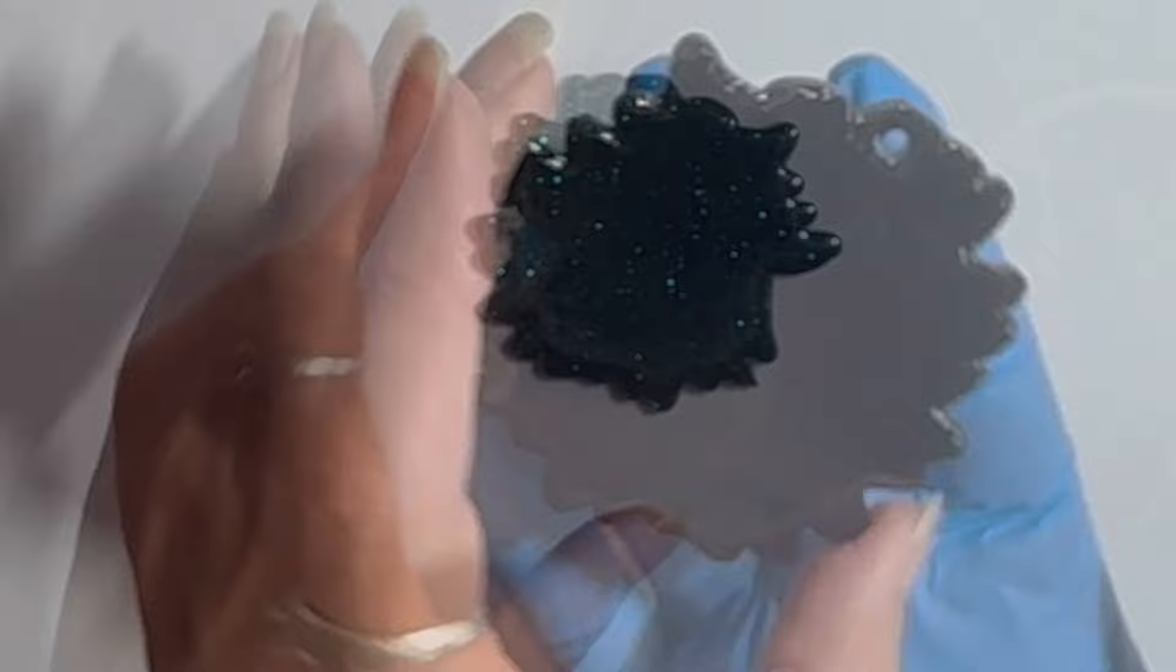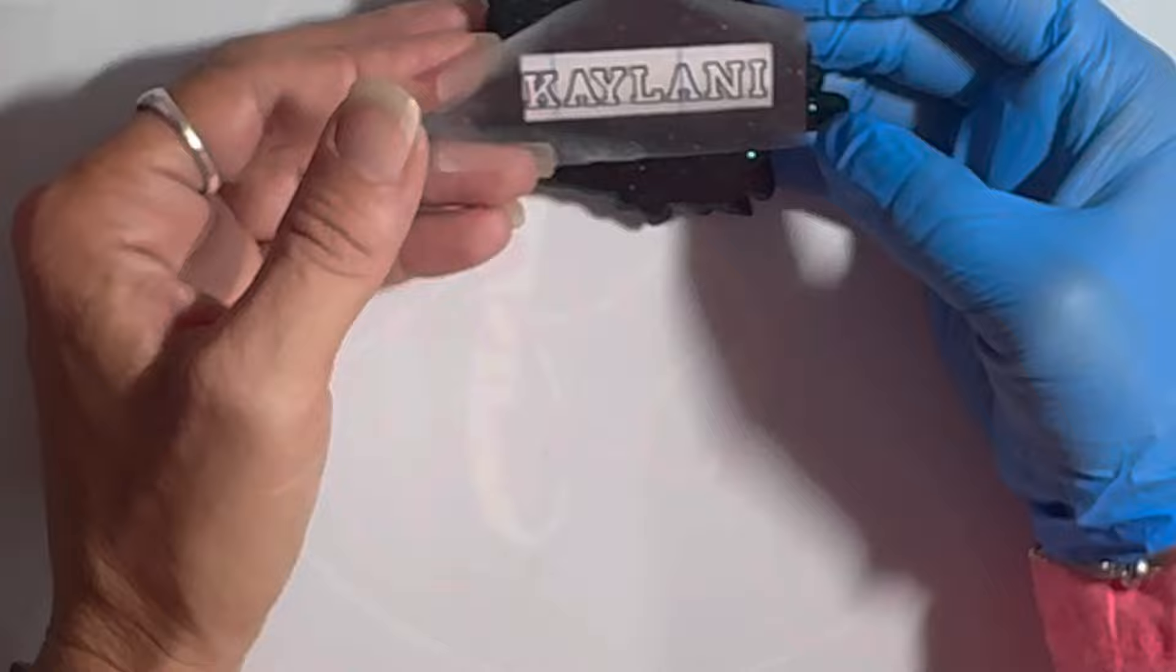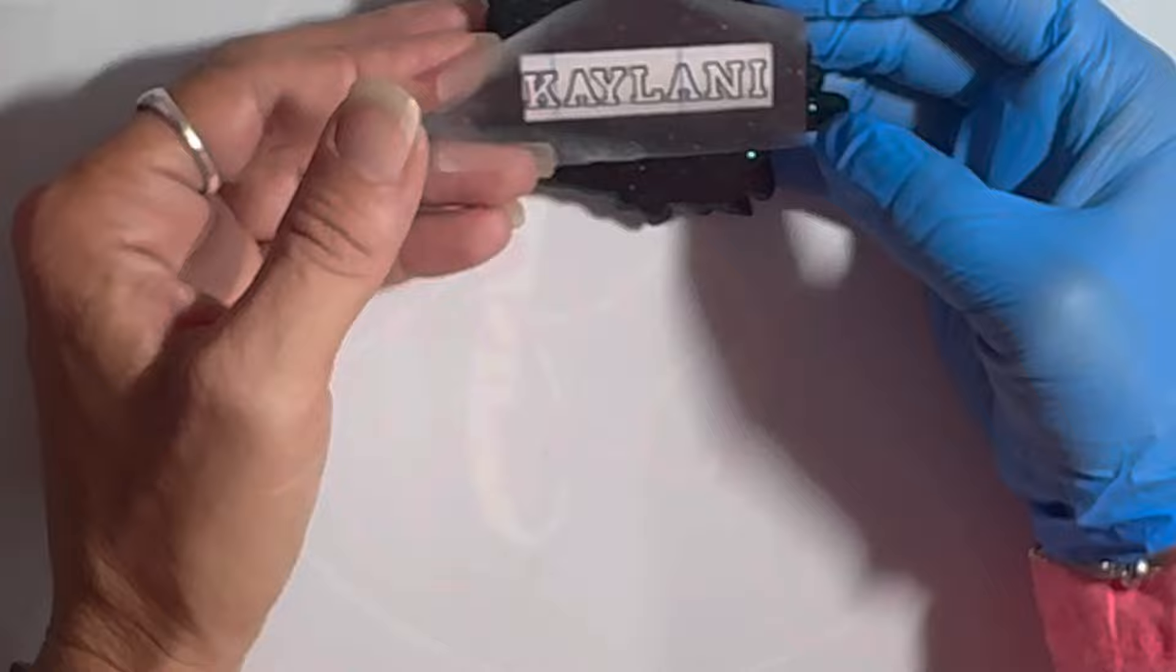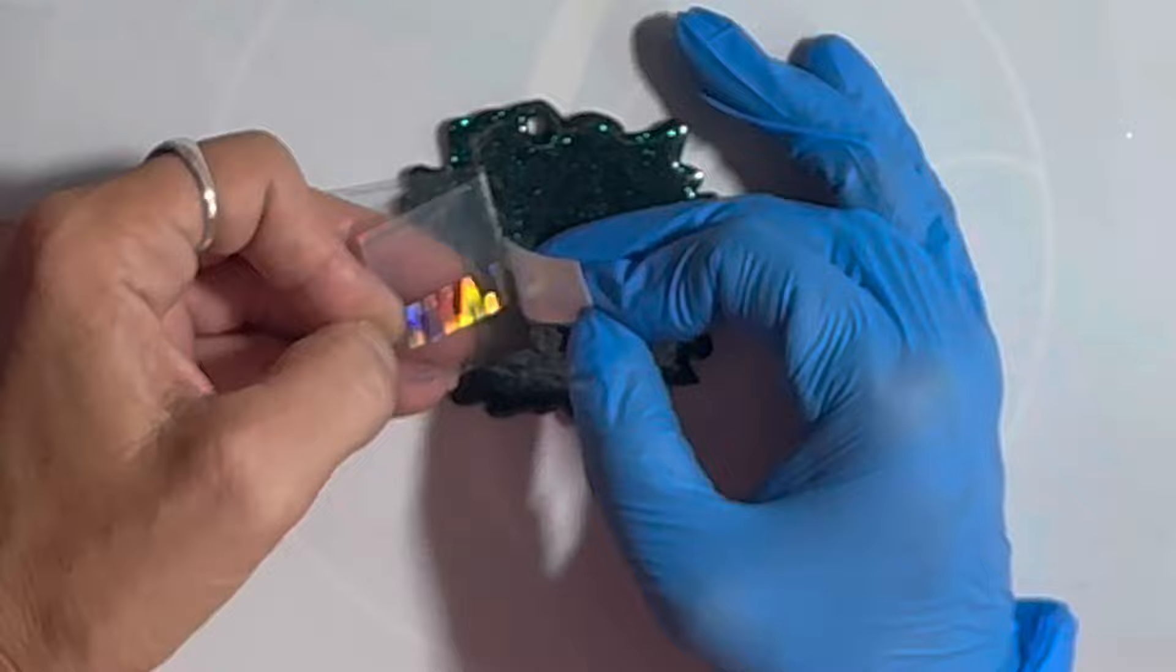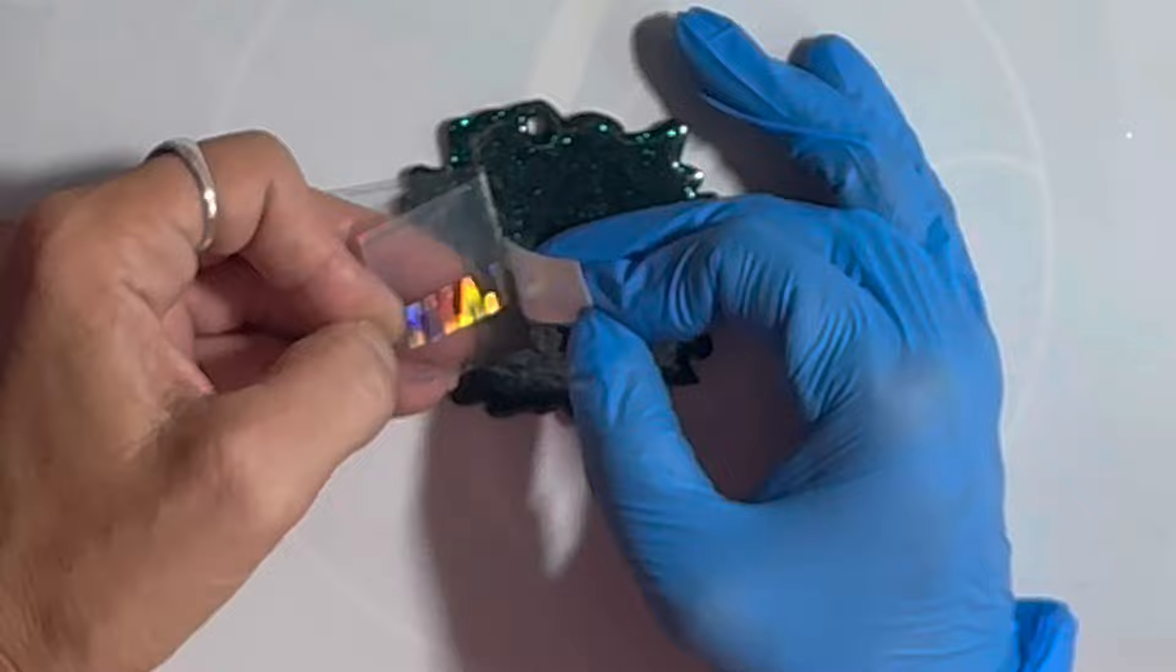That side's all ready to go. We're going to apply her name now. We're going to try to get it as centered with the pom-pom as possible. Slap it down, remove the other side of it. Use my squeegee to get it applied a little better.